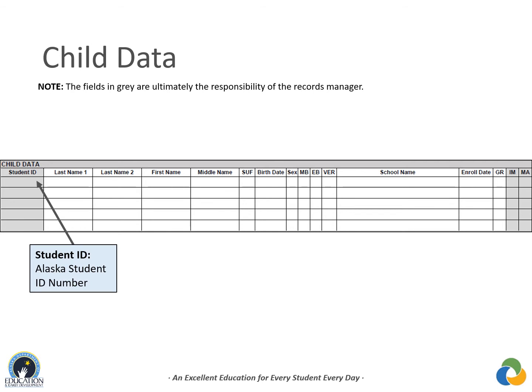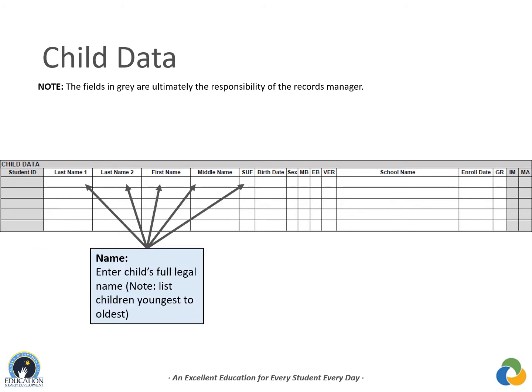Student ID refers to the child's Alaska Student Identification Number (AKS ID). If a child is enrolled in a public school, the records manager can obtain this from the district registrar. For children never enrolled in an Alaska public school, MIS 2000 will generate a placeholder number. The next five columns cover the child's legal name. Last Name 1 is the legal last name; Last Name 2 is a second last name or hyphenated name. If the child has more than two last names, record the full name in the comments section.